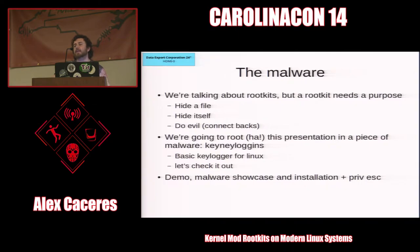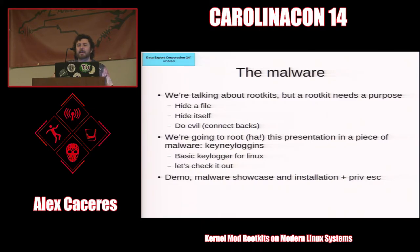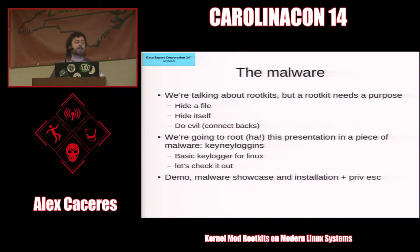So the rootkit part is what's going to let you hide the malware as you're running it. Basically what this talk is going to do is I'm going to run a piece of custom-written malware - it's a keylogger, spoiler alert - and then I'm going to run a rootkit such that you can no longer see that keylogger, and then some other little things on the side if I have time.